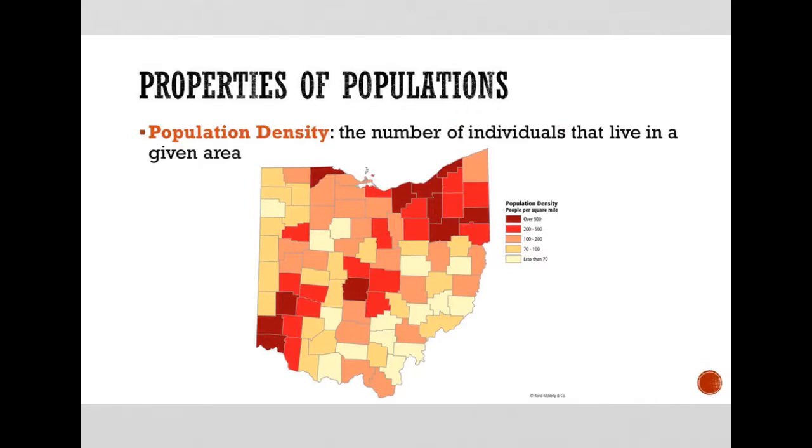Besides population size, you could have five or ten individuals, or 100 individuals, or 100,000. An even bigger thing to think about is population density. That's the number of individuals that live in a specific area. This happens to be a map of the state of Ohio and counties with a sort of population density map. So you can see how many people live per square mile.